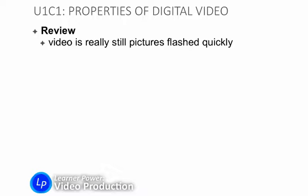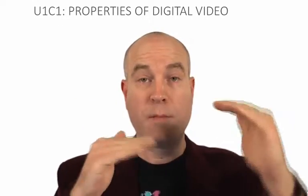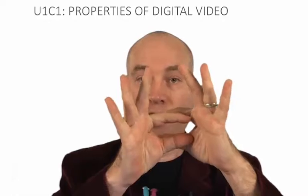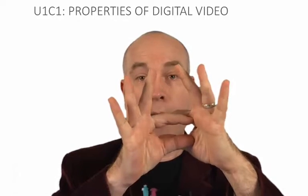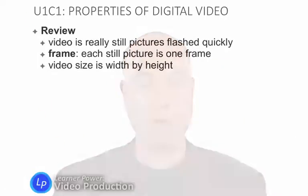Video is really just still pictures that are flashed quickly on a computer screen — nothing is actually moving. Each still picture is called a frame; a frame is one still picture of video. Video is measured in its size — its width by its height. It can be small, like on your little iPod screen, or large, like on your HDTV at home.